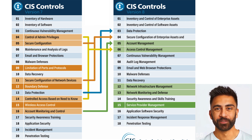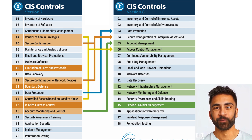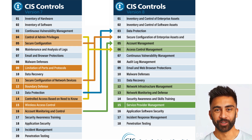Organizational Controls address the broader aspects of cybersecurity, such as implementing a security awareness and training program, incident response and management, and penetration testing. The CIS Controls provide a clear, actionable, and achievable roadmap for improving an organization's cybersecurity posture.